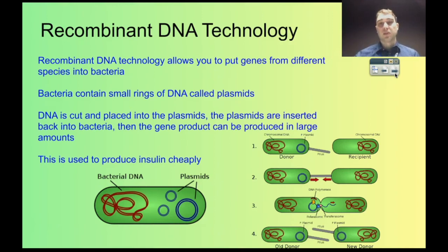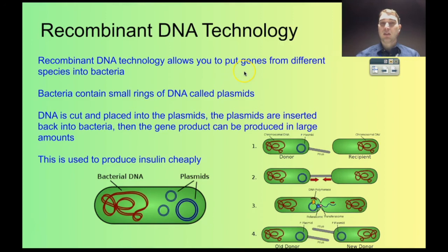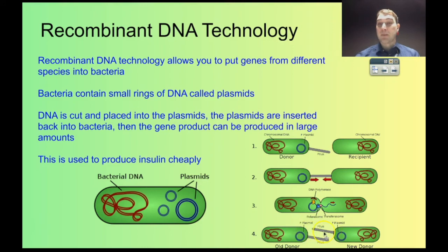The last example of humans using microorganisms is recombinant DNA technology. What recombinant DNA technology allows you to do is take genes from one species and put them into bacteria. That bacteria can reproduce really, really quickly, so you can produce lots of copies of a gene or gene products — proteins, for example. Bacteria cells can contain rings of DNA called plasmids, which allow bacteria to exchange information from one bacterium to another. They grow a pilus between one bacteria and the other, send a copy of the plasmid through, and the pili break off. This allows bacteria to exchange information without sexual reproduction.